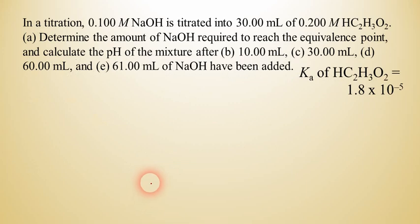Let's take a look at this example, which is fairly complex and will take a little time to get through. In a titration, we have 0.1 molar sodium hydroxide being titrated into 30 milliliters of 0.2 molar acetic acid. Part A says: determine the amount of sodium hydroxide required to reach the equivalence point. This sounds like a titration equation type of problem, and it is. We're just going to plug into M_A·V_A = M_B·V_B.